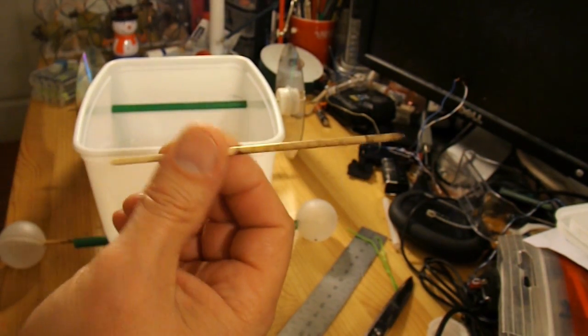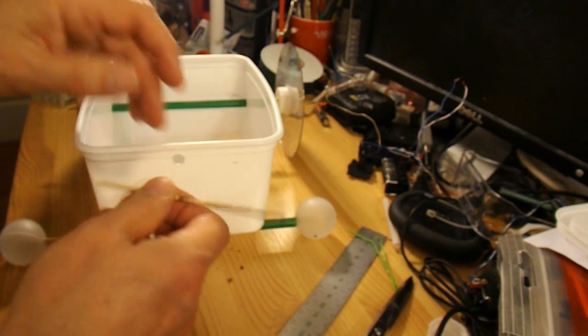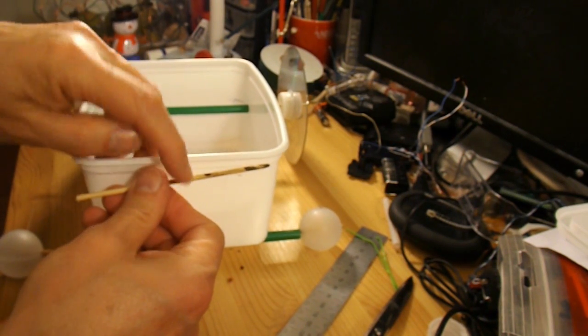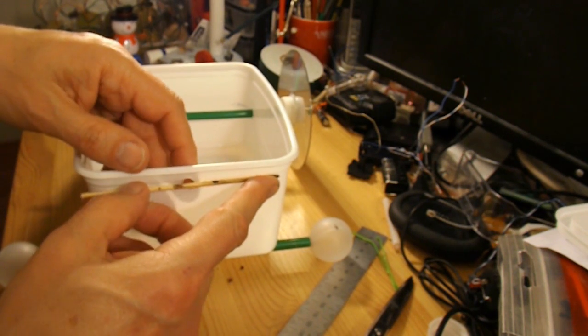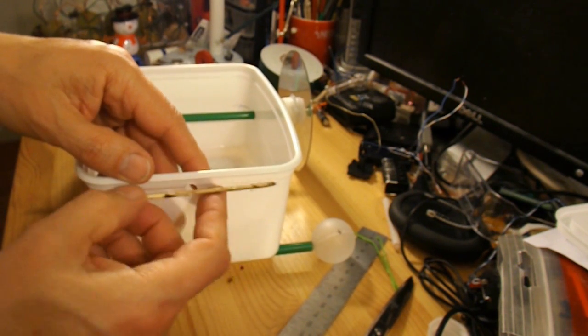And then I'll use another bit of barbecue skewer on the front there to loop the rubber band round and spread the load, so we're not going to bend the plastic.